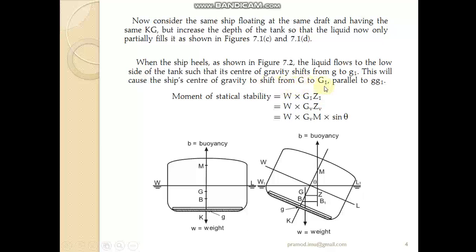So your G shifts to a new point G1 parallel to GG1, and in this case the moment of statical stability is W into G1Z1, which is W into G1M sin theta. Now we can see both cases are different. When you have a tank with ullage on the ship, if the ship heels or lists, there will be a change in center of gravity motion of the vessel.